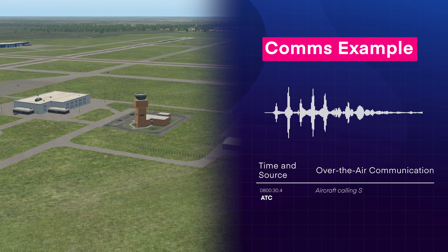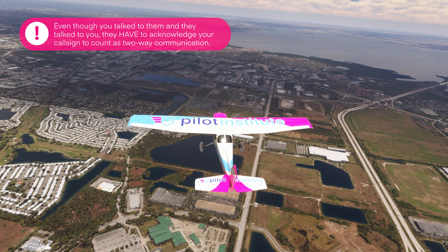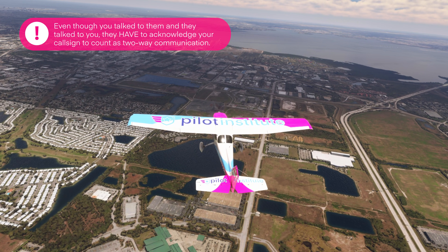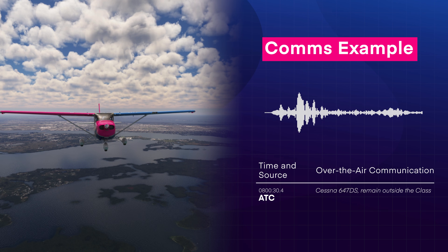If the tower can't deal with you just yet, they might respond: 'Aircraft calling State Tower, stand by.' Does that mean you can fly into the airspace? Nope. Even though you talked to them and they talked to you, they have to acknowledge your call sign in order to count as two-way radio communication — so you'll need to circle outside the Delta and wait for further instructions. And if they say 'Cessna 647 Delta Sierra, remain outside the Class Delta,' you still cannot legally enter — the tower is asking you to stay out.